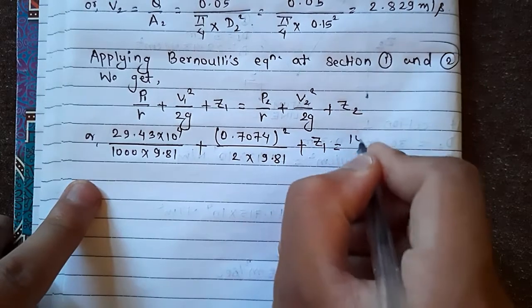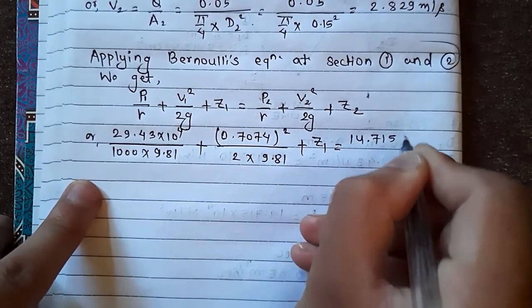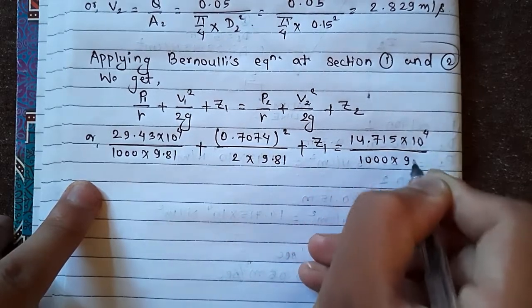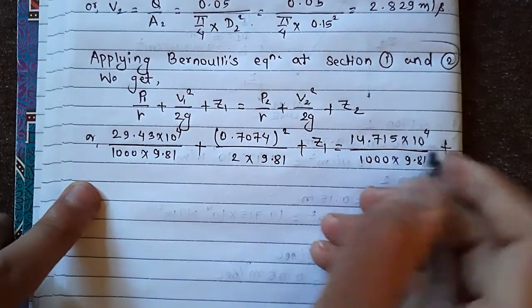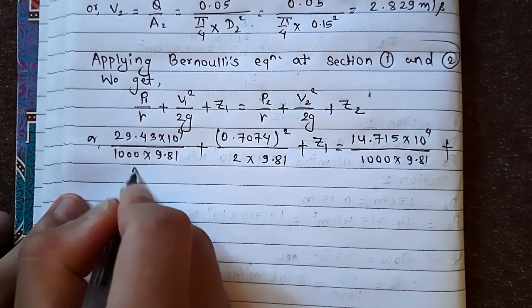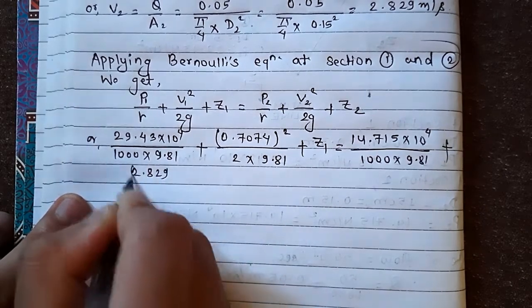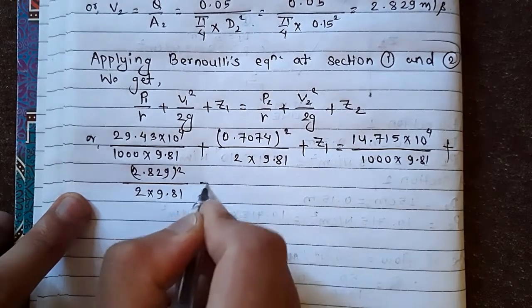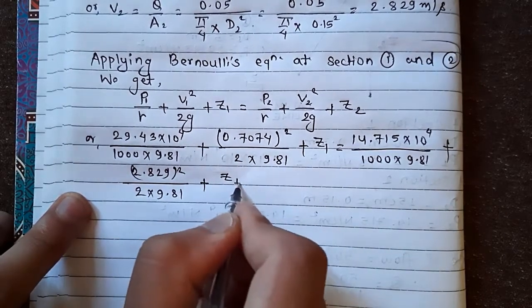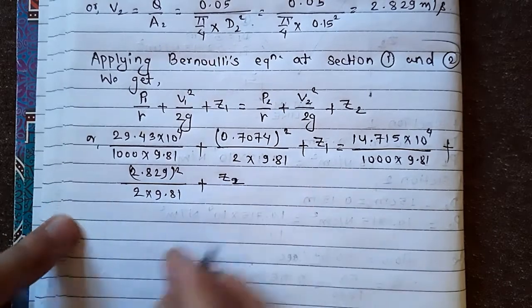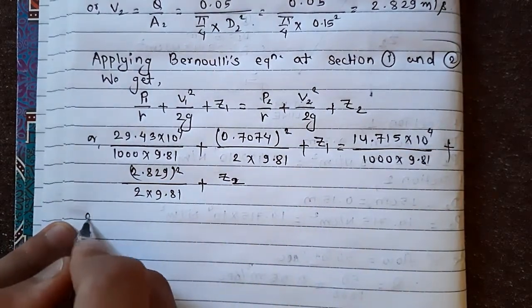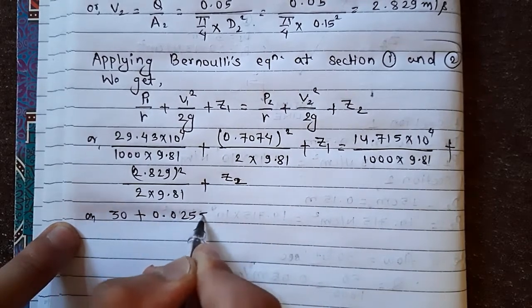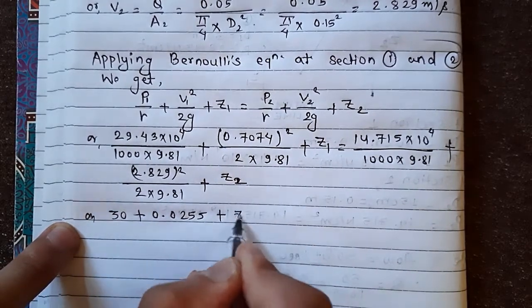equals to P₂ 14.715 into 10 to the power 4 divided by 1000 into 9.81 plus V₂ 2.829 square divided by 2g 2 into 9.81 plus Z₂.